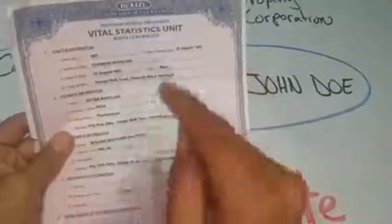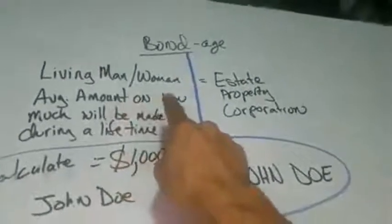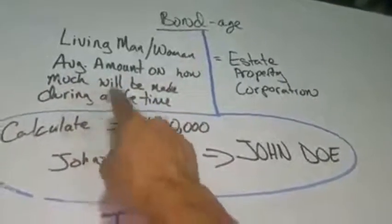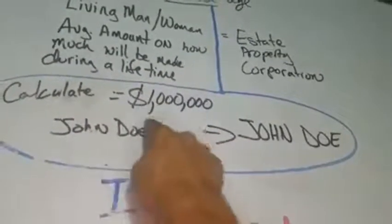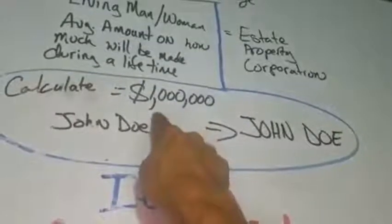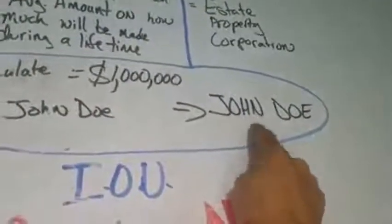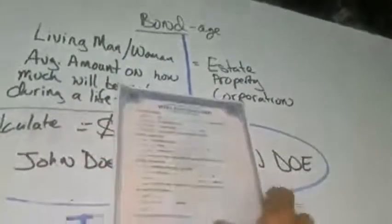So this property has to get insured — this is a receipt for that insurance. Now, how about the bond? When the living man or living woman is born, what happens is that the average amount of how much they earn in a lifetime is calculated and they come up with a certain number. So let's say John Doe is calculated to average about a million dollars — that million dollar value gets attached to the estate, which is this property.